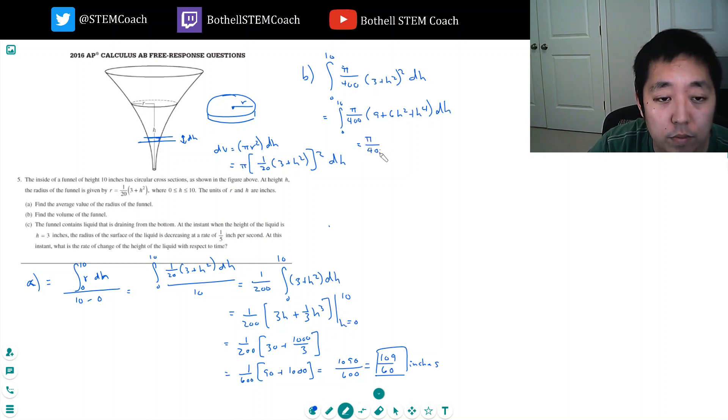I'll bring out the pi over 400. And then 9h plus 2h cubed plus 1/5 h to the fifth. So h goes from 0 to 10. Pi over 400 times 90 plus 2,000 plus... 10... what is that? 100,000 divided by 5. That's 20,000.